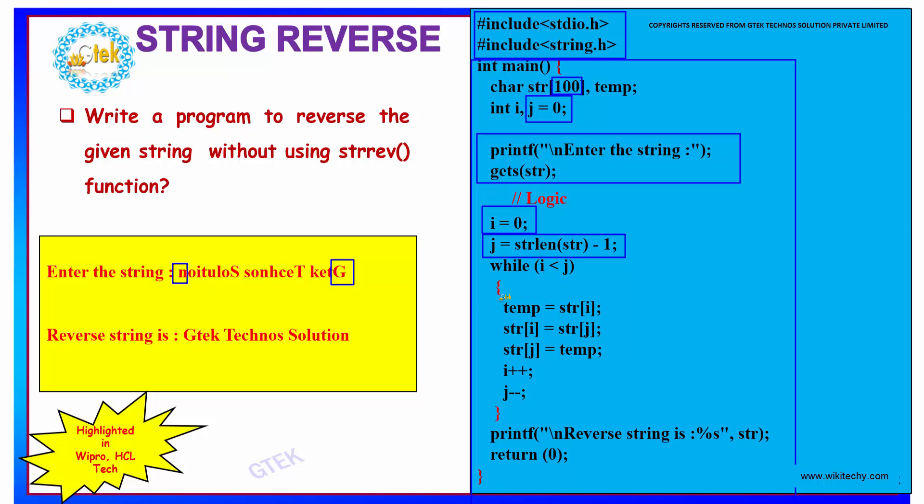And we are storing it in the temp. That is your ith position is stored in temp. Followed by your jth position is assigned to your ith position. And your temp value, that is your n, is stored into jth position of your array. So that makes g to come over here and n to come over here. A simple swapping logic is applied over here.